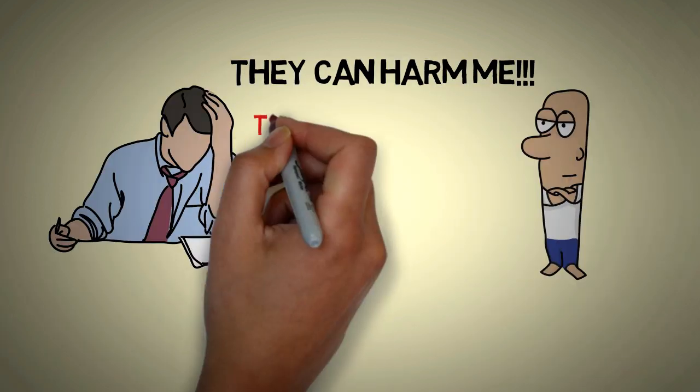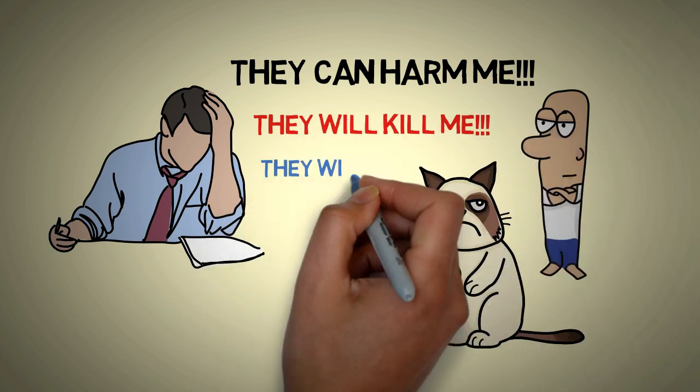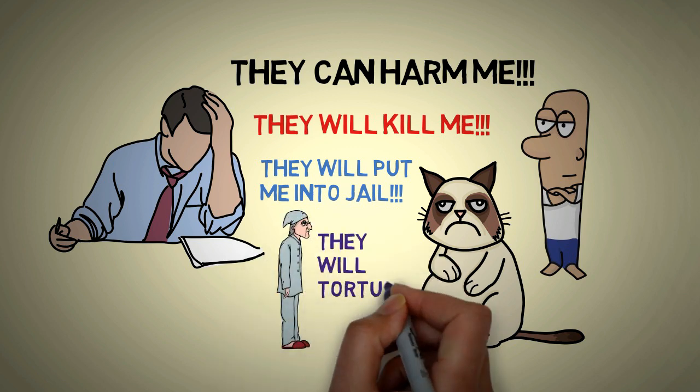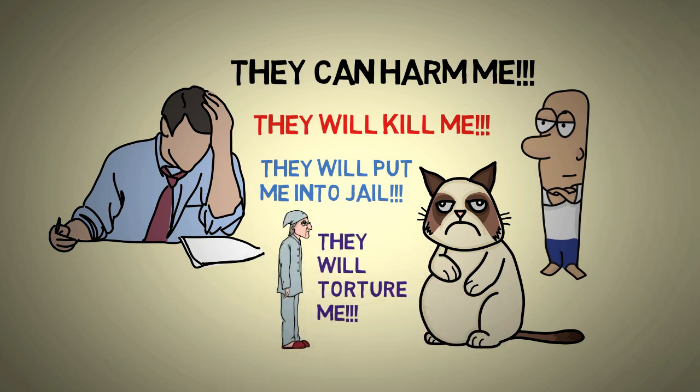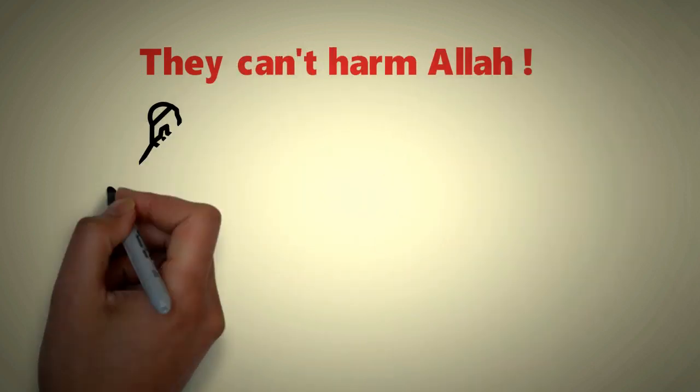I'm not worried about them harming Allah, I was actually kind of worried about them harming me. So I was expecting Allah will say don't worry about their schemes, they won't harm you. But Allah says what instead? Don't worry about their schemes, they can't harm Allah. Why is that?